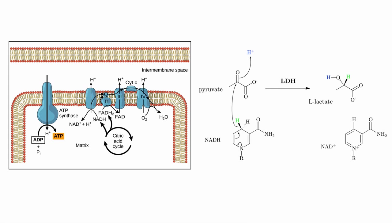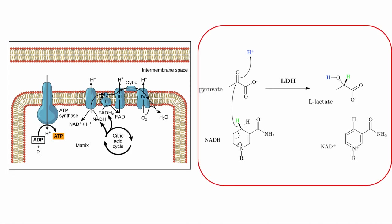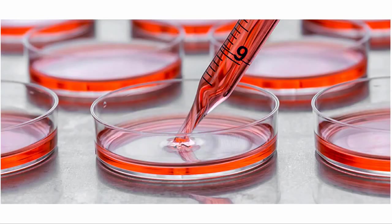Once NAD has been reduced to NADH, the cell has two major ways to re-oxidize back to NAD plus: the mitochondrial electron transport chain and lactate dehydrogenase, which generates lactate. When cells are in culture, they do not have a functioning transport chain, and so the only mechanism available is lactate dehydrogenase. Rapamycin has been shown to decrease lactate production in cultured cells, raising the possibility that it can also shift the NAD redox balance.